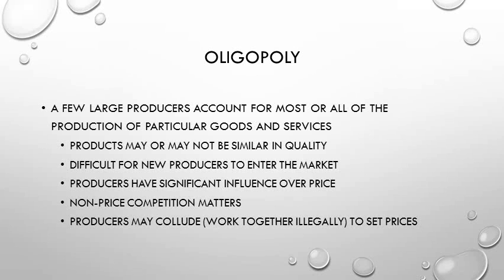Oligopoly is the third structure. This involves just a few large producers who supply most of the goods and services in this particular market. The products may or may not be similar in quality. It's difficult for new producers to enter this market — it doesn't allow for startups very easily. Producers have significant influence over price, and non-price competition matters.